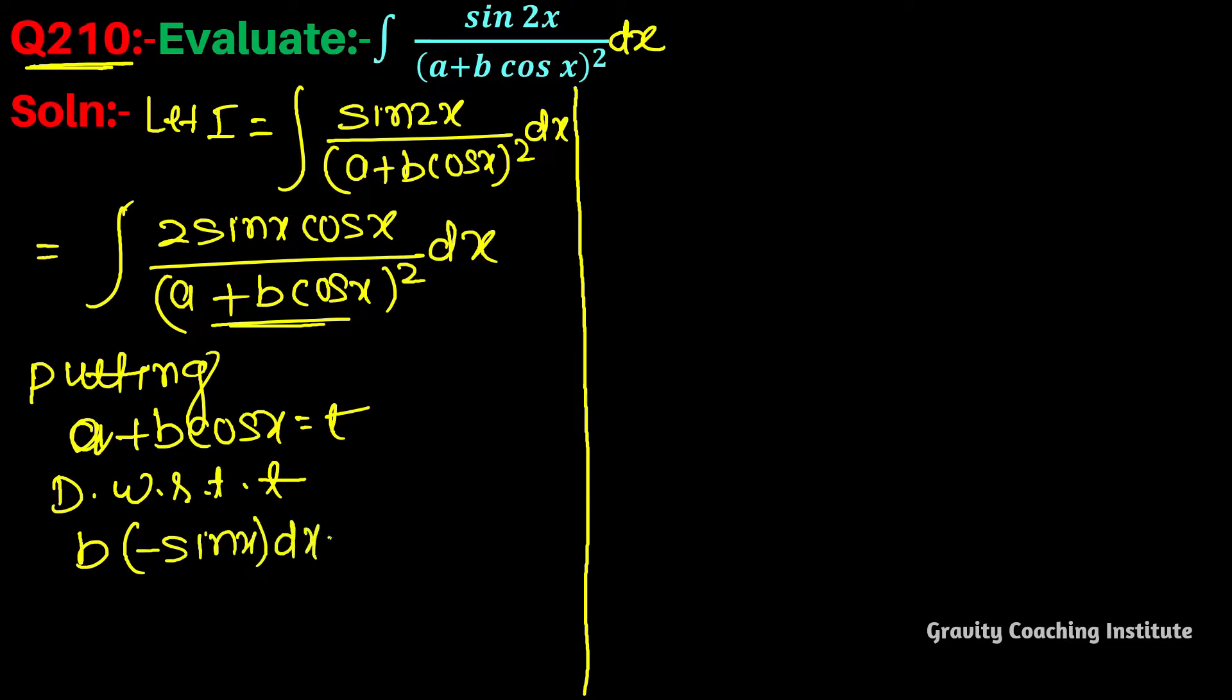So sin x dx equal to minus 1 by b dt. Therefore I equal to integration 1 upon t square, where cos x equal to t minus a upon b.